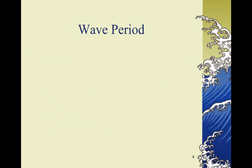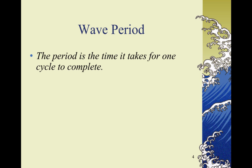So let's look at the wave period. The period is the time it takes for one cycle to complete. It also is the reciprocal of the frequency. So t equals 1 over f, where t is the period and f is the frequency.